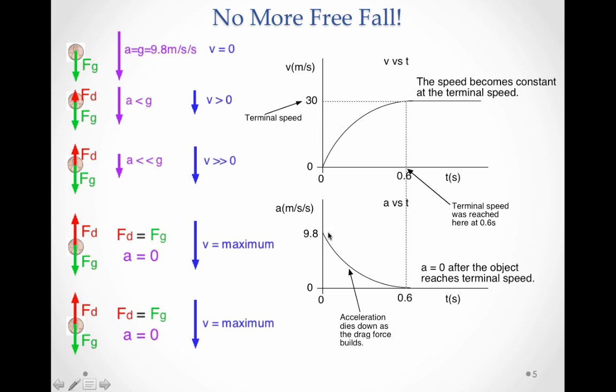So, again, the penny starts to accelerate at 9.8 but the acceleration dies down to zero. So, this is a big concept that the acceleration is zero after the object has reached terminal speed. So, its acceleration dies down. The speed builds up, but how much it's building up is getting less and less and less. And then finally, when it stops accelerating, the penny will have reached a constant speed.